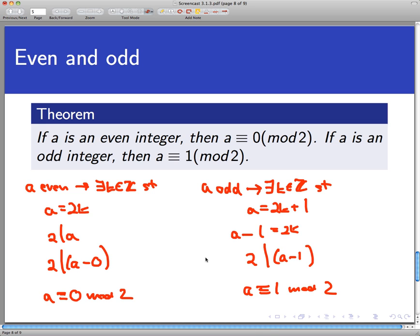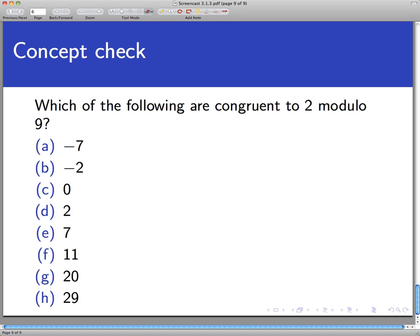So this is a handy way of checking whether a number is even or odd in terms of integer congruence, and it will become very handy for us in a number of contexts later on. So let's end off with a concept check to see how well you're understanding this notion of congruence modulo n. Which of the following numbers here are congruent to 2 modulo 9? Definitely there could be more than one right answer here, so pause the video, think about it, and select all that apply.